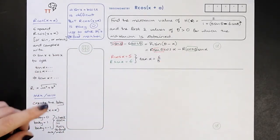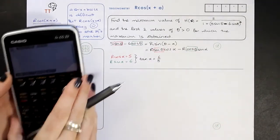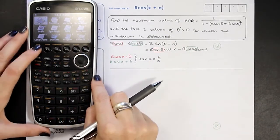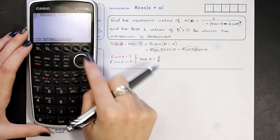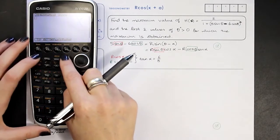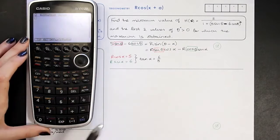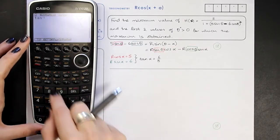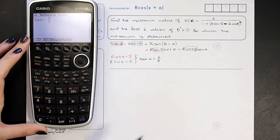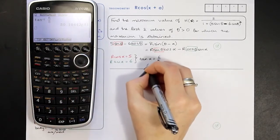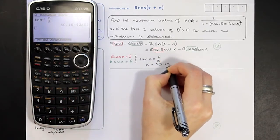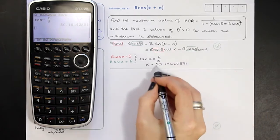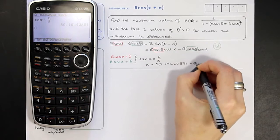We're working in degrees here, so let's check the calculator is in degrees. Let's do shift-tan of 6 over 5 and then we get our alpha. So alpha is 50.19442891…, but we're going to work to three significant figures, so α = 50.2°.